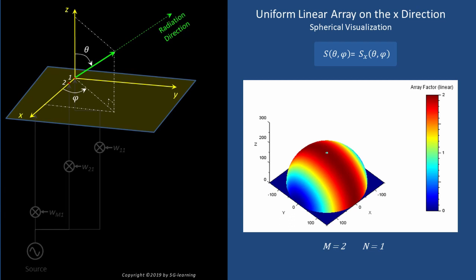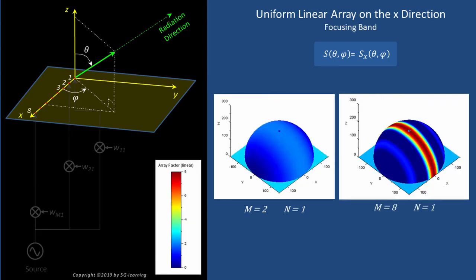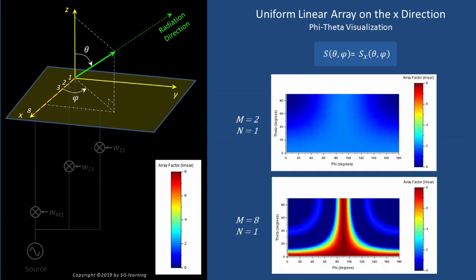Note that the pattern shows a revolution symmetry around the array axis, and the plane orthogonal to the array at its center is a plane of symmetry. If we increase the number of array elements from two to eight, these symmetries are still present. For eight elements, the high-intensity region on the sphere is concentrated in a narrow band, while for two elements this region remains diffuse and low. In conclusion, increasing the number of array elements leads to higher directivity.